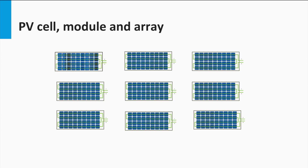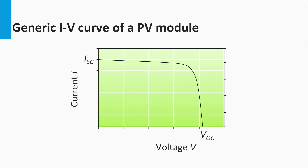Thus it is reasonable to consider the IV curve of a solar module or array similar in nature to that of a solar cell. So let's look at the simple IV curve of a solar module. The IV curve is nothing but the current-voltage curve, and it is defined for a unique set of temperature and irradiance conditions.